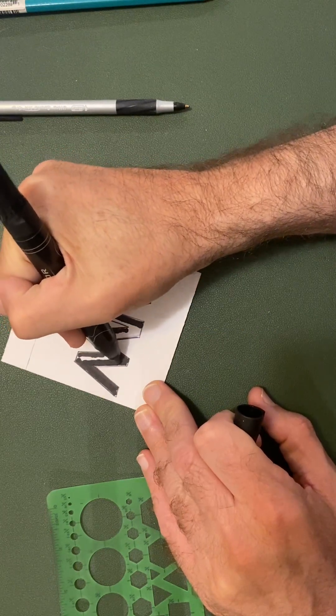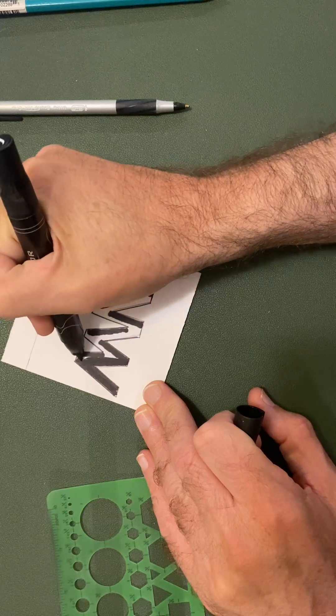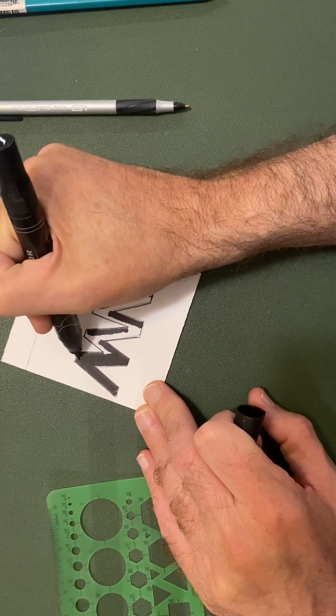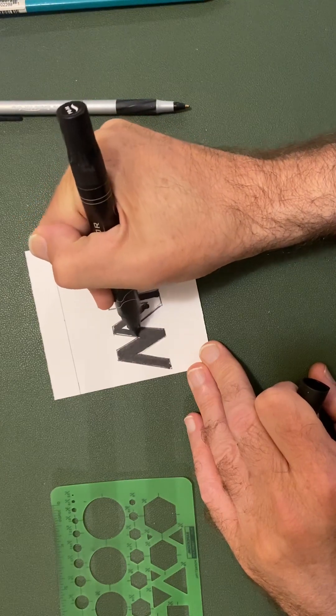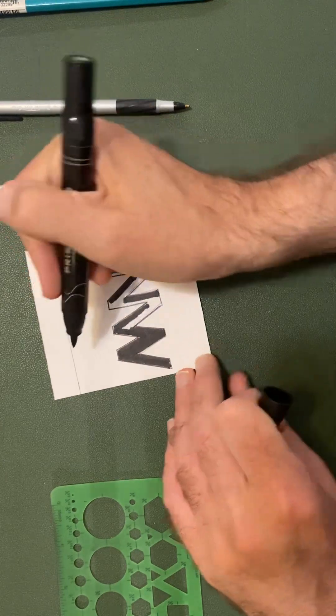But, see what happens is that when you get against that one line, that's nice and tight. And then you flip it and go against the next line.